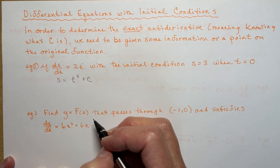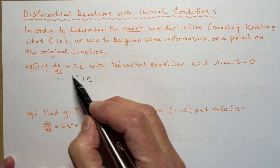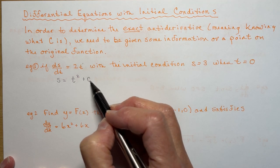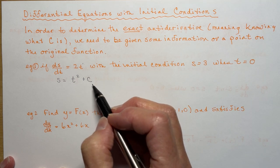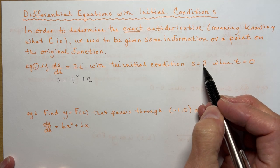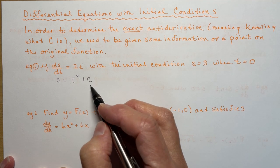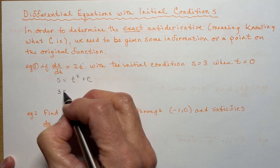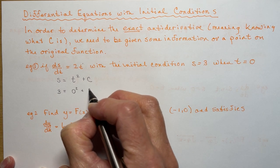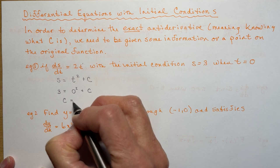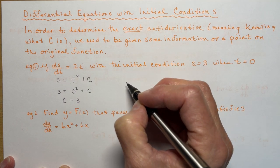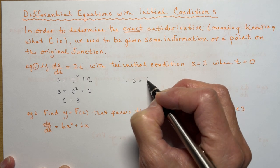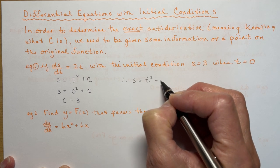Don't forget the c. Double check: take the derivative of this — yes, it's 2t, correct, and the derivative of a constant is 0. So now all I have to do is say, if s is 3 when t is 0, what is c? So: 3 equals 0 squared plus c, and c is obviously equal to 3. So then I can give my concluding statement: therefore s is equal to t squared plus 3. Very easy.